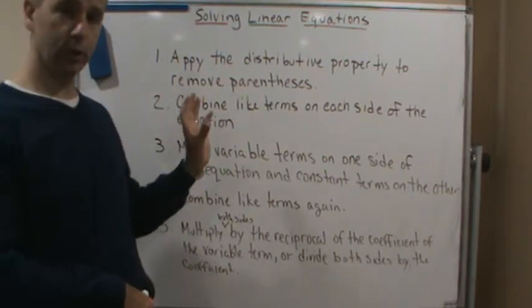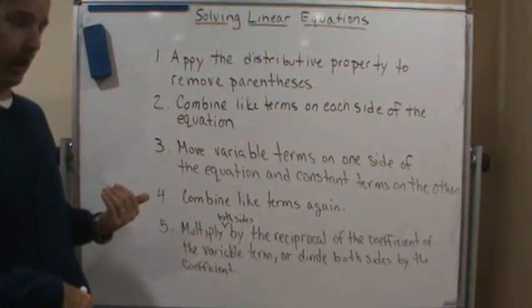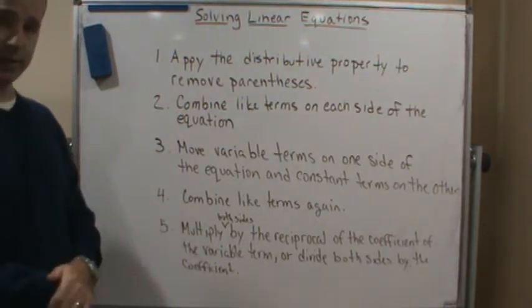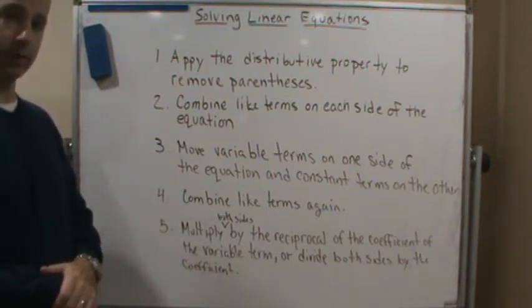we're going to move all the variable terms to one side of the equation, all the constant terms to the other side of the equation, and then we're going to combine like terms again because that may happen, we may end up with more like terms on one side.